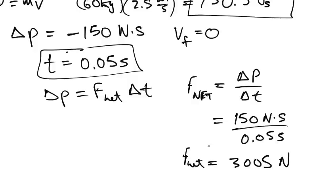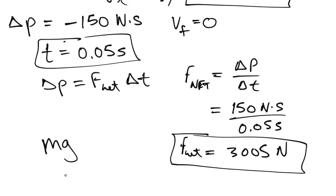Now, that's quite a lot, by the way. That's quite a lot because the person weighs, their weight would be mg. And so if they're 60 kilos, g is approximately 10, so their weight is going to be approximately 600 Newtons, 60 times 10.